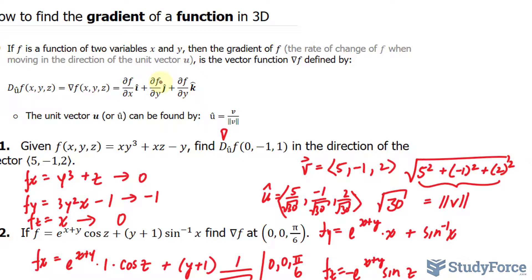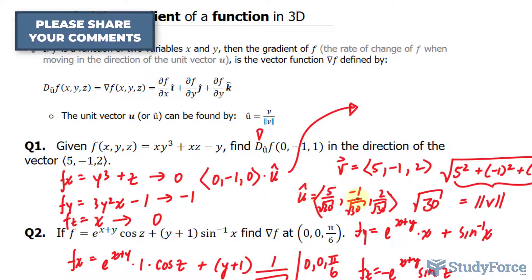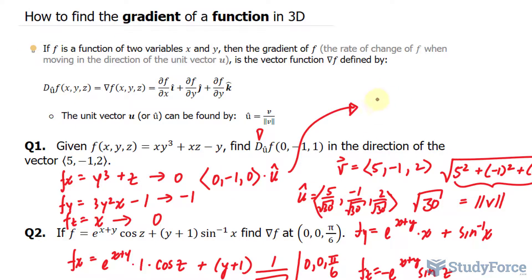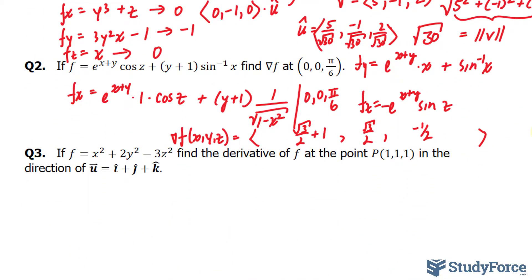According to the formula, we multiply the gradient vector (0, negative 1, 0) by the unit vector û. Doing this: 0 times the first component is 0, negative 1 times (negative 1/√30) gives positive 1/√30, and 0 times the last component is 0. So the final answer is 1/√30. This means the function f changes at that rate when we are at the point (0, negative 1, 1) and moving in the specified direction. If you'd like to see the answer to question 3, watch part 2 of this series. Hope to see you soon.